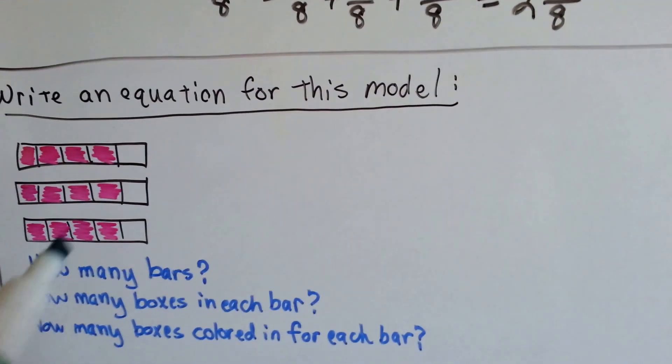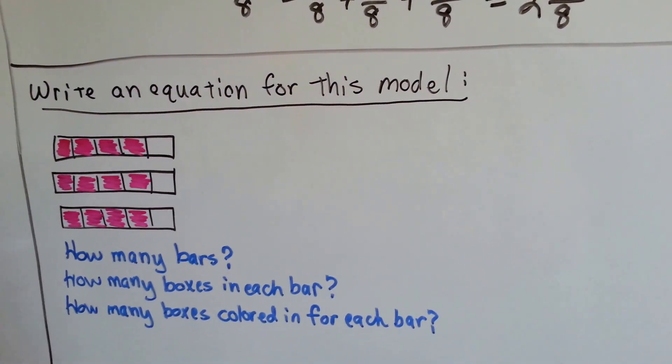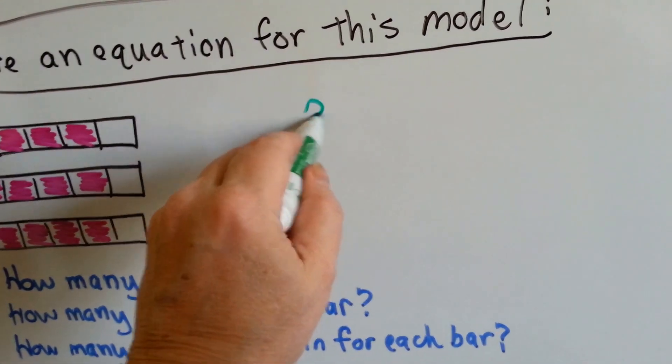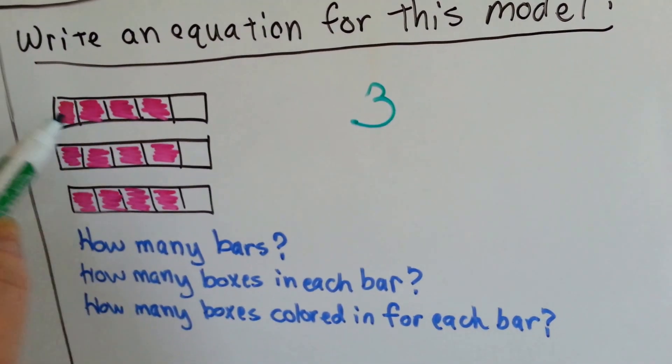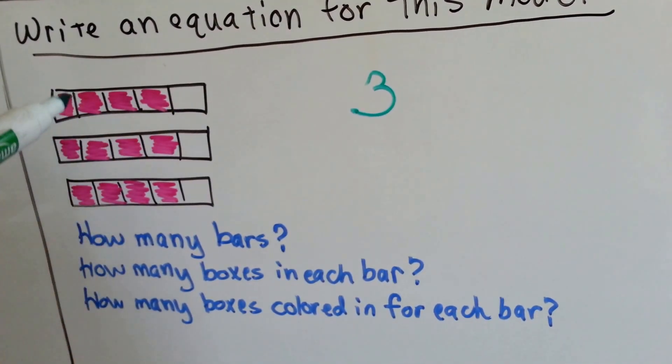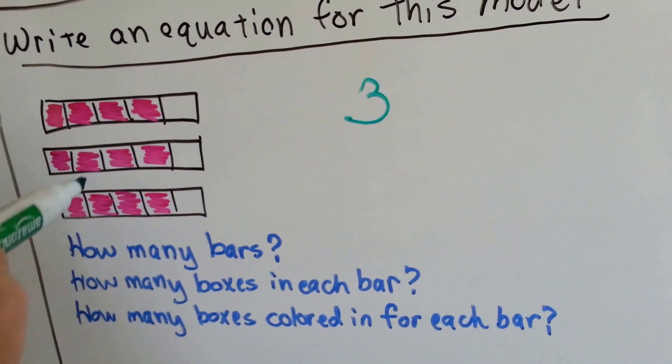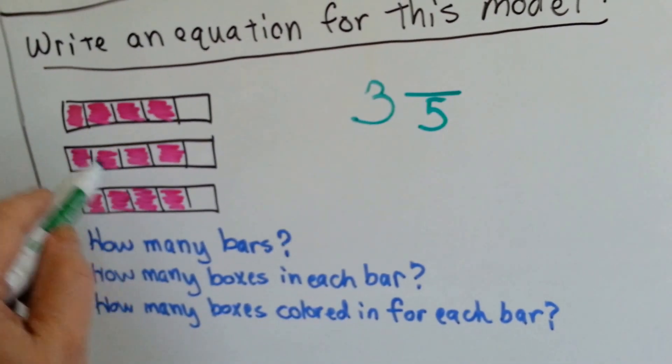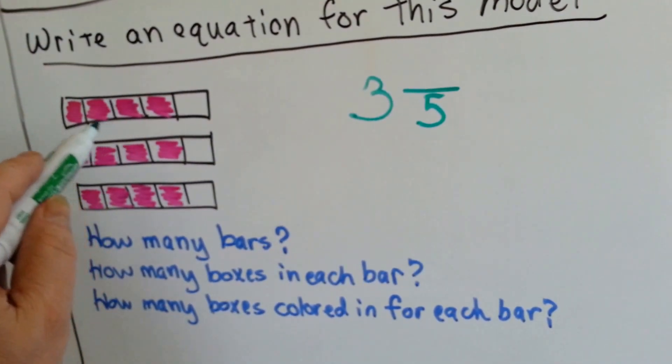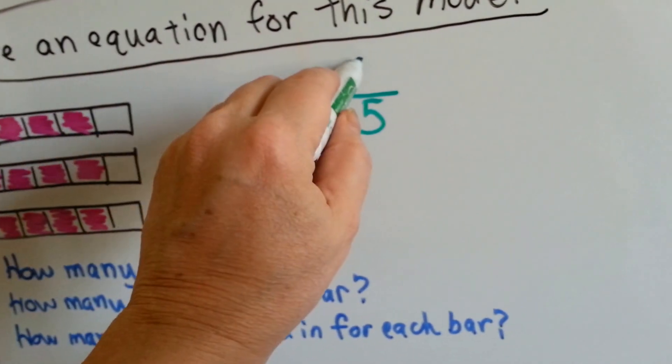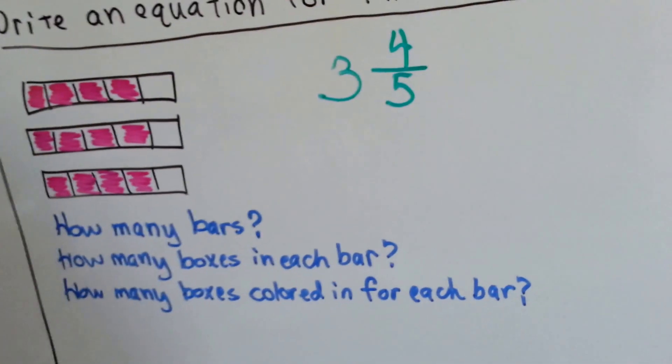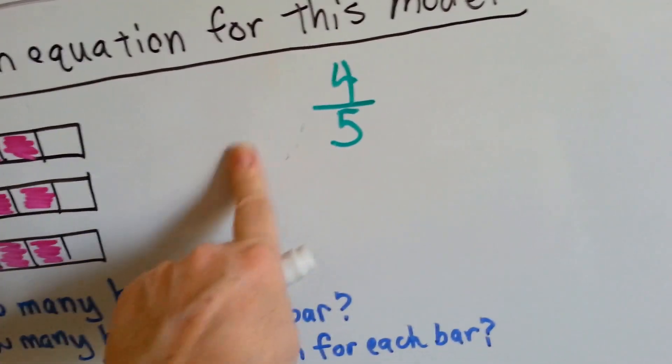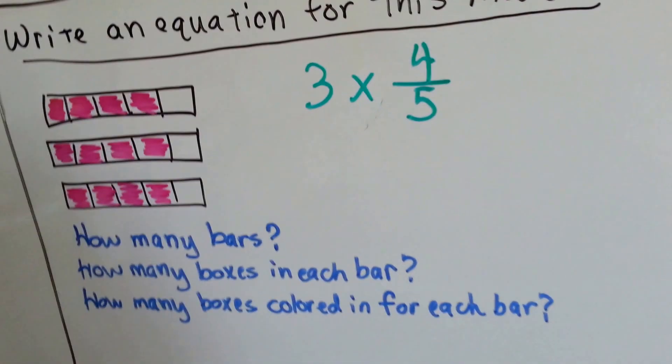What if you saw this and you needed to write an equation? How many full bars do you see? I see three. And how many boxes are in each bar? One, two, three, four, five. So we know our denominator is five. And how many are filled in in each box? Four in each box. So we've got three—let me move this over—we've got three times four-fifths.